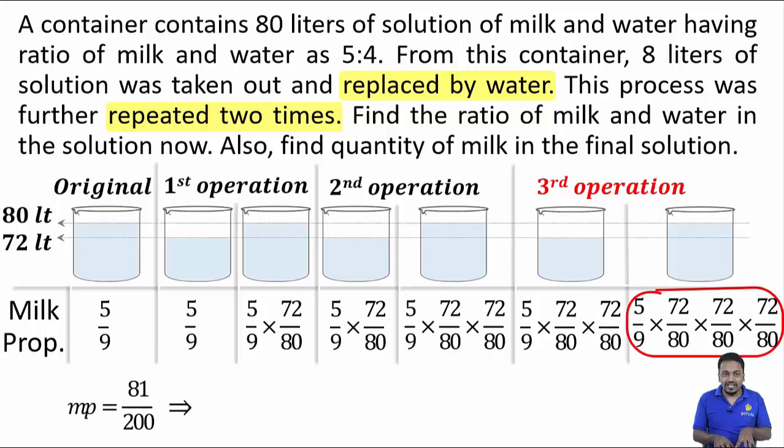That means quantity of milk will be 81/200 in total volume 80 liters. This gives 32.4 liters as the final answer. And milk is 81 parts out of total 200. So, milk water ratio will be 81/(200 - 81).